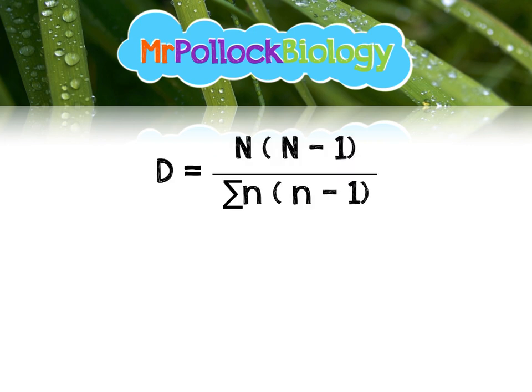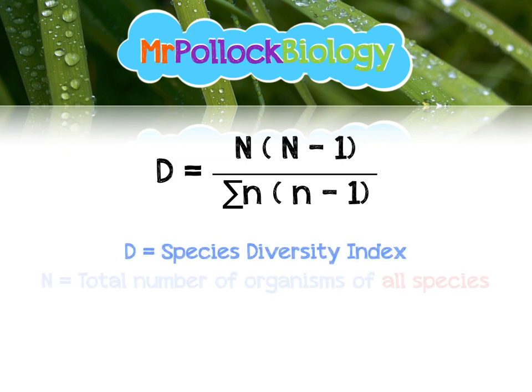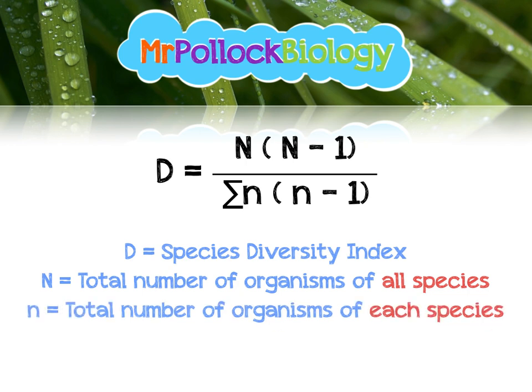This is the equation we have to use. If you're doing Simpson's index, it's pretty much the same but the capital N's and the lowercase n's are swapped. So D is the species diversity index. Capital N is the total number of organisms of all species together. Lowercase n is the total number of organisms of each individual species. And sigma, as ever, means the sum of — add them all together.